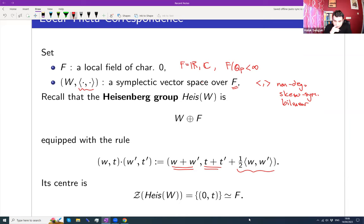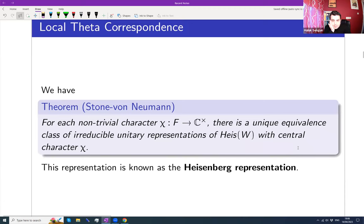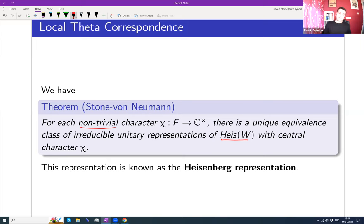This Heisenberg group is very well known. Its center is the extra F component, isomorphic to F; it's a nilpotent group and very well studied. The Stone–von Neumann theorem says that if you fix a non-trivial character χ of the base field F, then up to equivalence there is a unique irreducible unitary representation of the Heisenberg group whose central character is given by χ. For a trivial character you only get one-dimensional representations, so to get something interesting you need a non-trivial character.